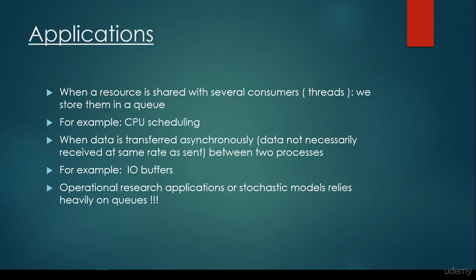So what about the applications? There are several applications for the queue abstract data type, for example in several graph algorithms. But for example, when a resource is shared with several consumers, we can represent it with the help of threads in programming, then we store them in a queue abstract data type.